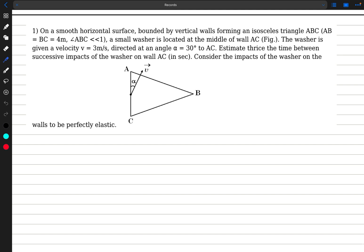In the question we have a smooth horizontal surface bounded by vertical walls forming an isosceles triangle ABC. The sides BC and AB are equal to 4 meters and the angle ABC is much smaller than 1, so this is a very small angle. A small washer is located at the middle of wall AC and the washer is given a velocity of 3 meters per second directed at an angle alpha to the vertical.